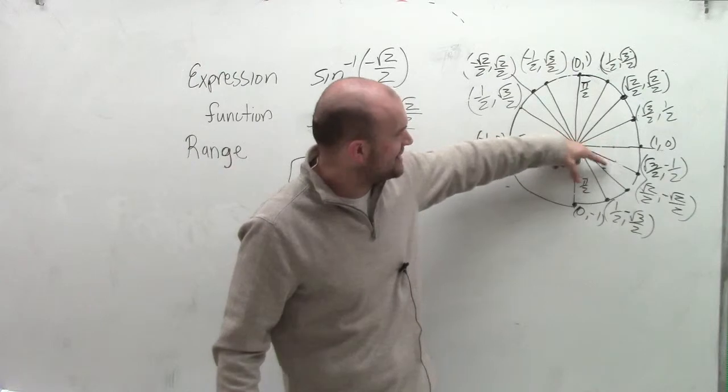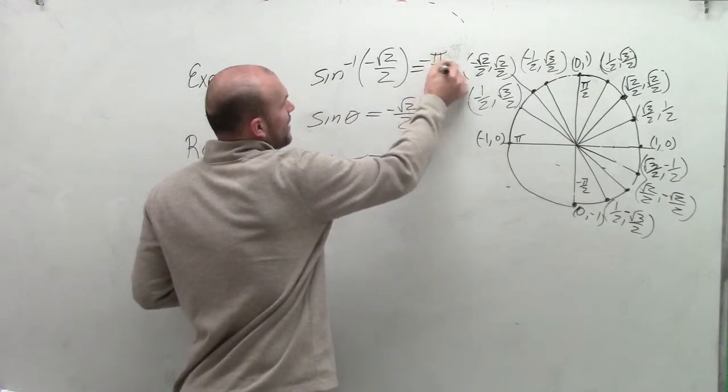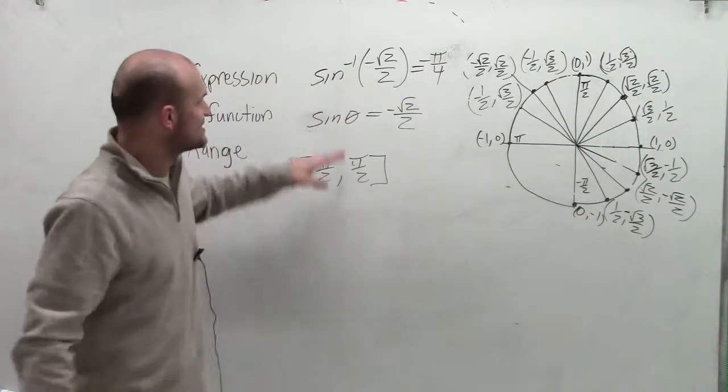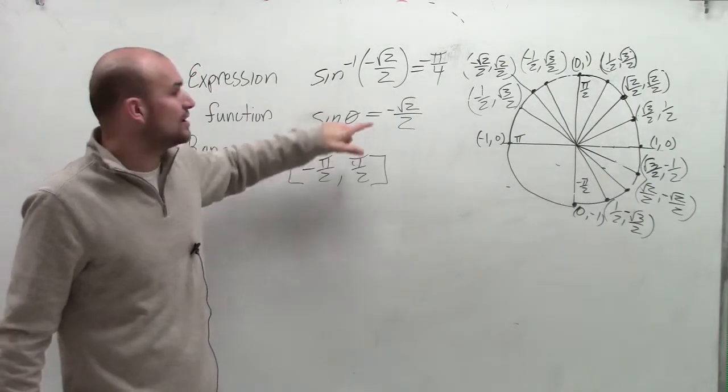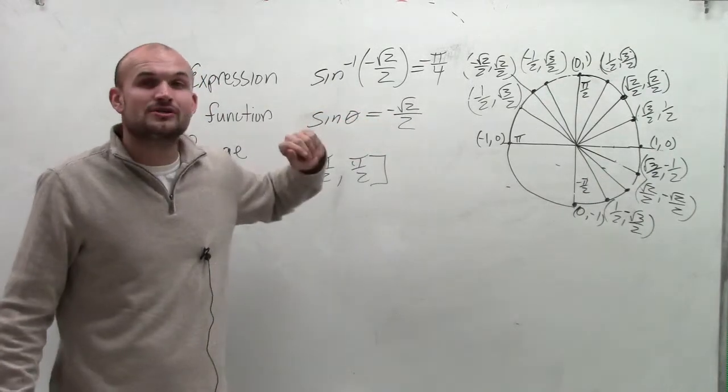Therefore, I can only apply my negative angle, which is going to be negative pi over 4. So what that says is the sine of negative pi over 4 is equal to the negative square root of 2 divided by 2.